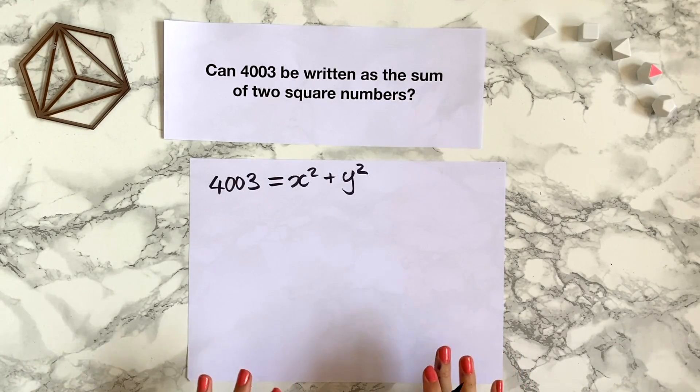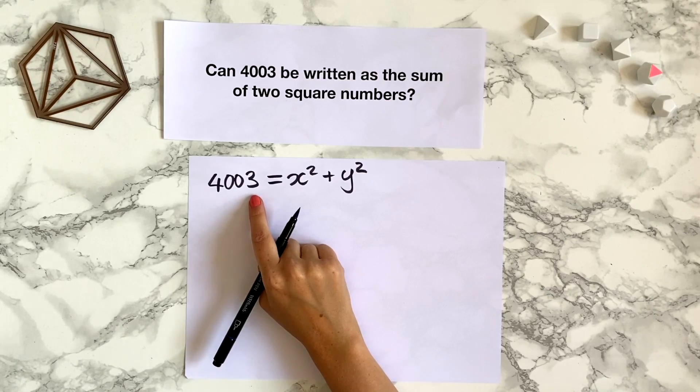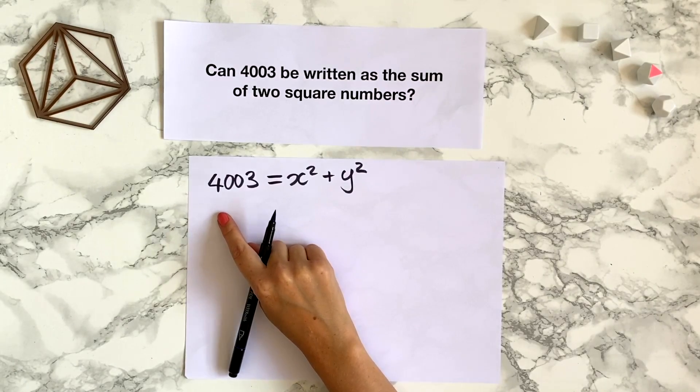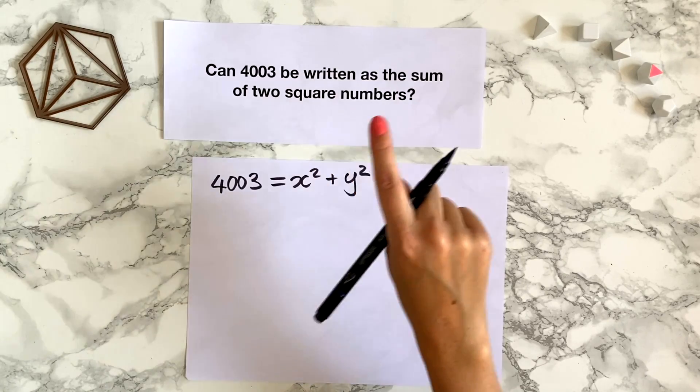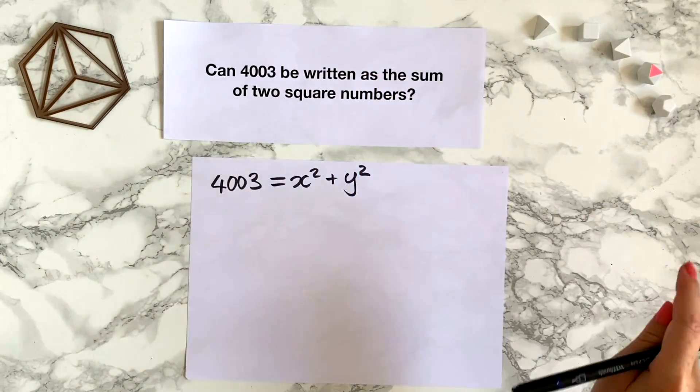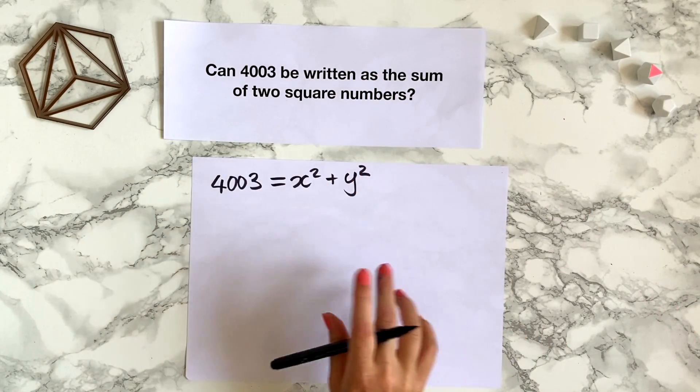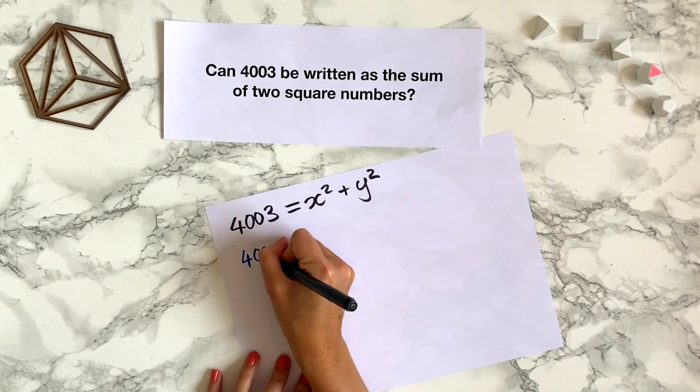The first thing we're going to notice is that 4003 is congruent to 3 modulo 4, because 4000 is divisible by 4. So 4003, well you'll count three round on the clock, so 4003 is congruent to 3 modulo 4.